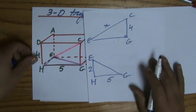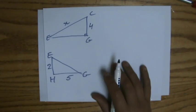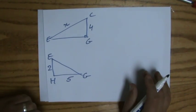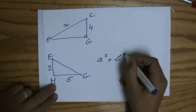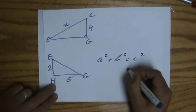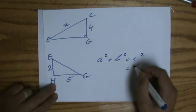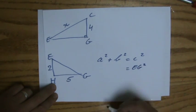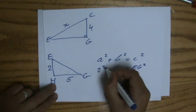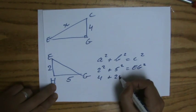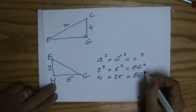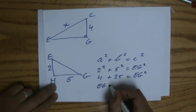EG is the hypotenuse in this triangle and I know that HG is 5 and HE is 2, so I can calculate EG and use that information to calculate CE. It's all about Mr. Pythagoras. A squared plus B squared equals the hypotenuse squared.